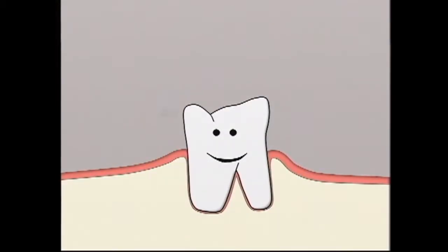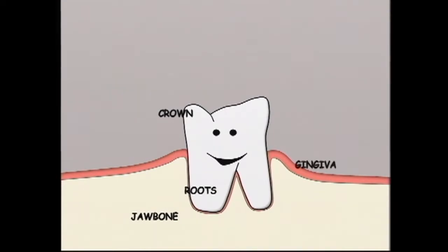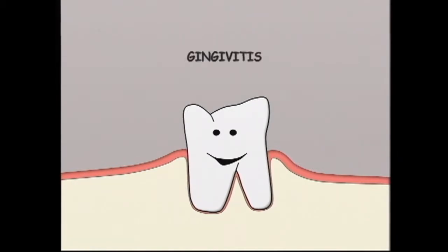Each normal cat tooth has a crown and one to three roots. It sits in the jawbone, is surrounded by gingiva or gum, and is held in place by the periodontal ligament. Gingivitis means inflammation of the gum. It occurs when plaque, made up of proteins, carbohydrates, and bacteria from saliva, builds up on the crown at and below the gum line.